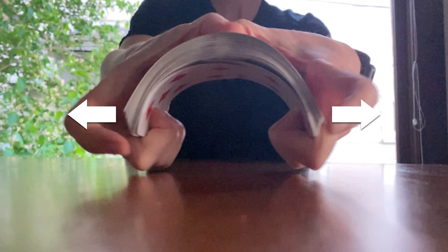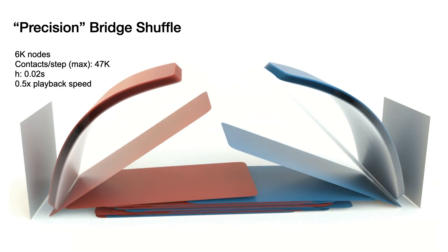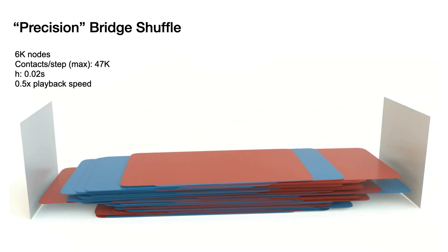Notice though that a bridge usually starts with the cards partially interleaved. Here we add to the challenge and set CIPC to perform a precision bridge shuffle by first keeping the two piles apart in the initial bridge. We then interleave them by alternating the release one by one every 20 milliseconds.